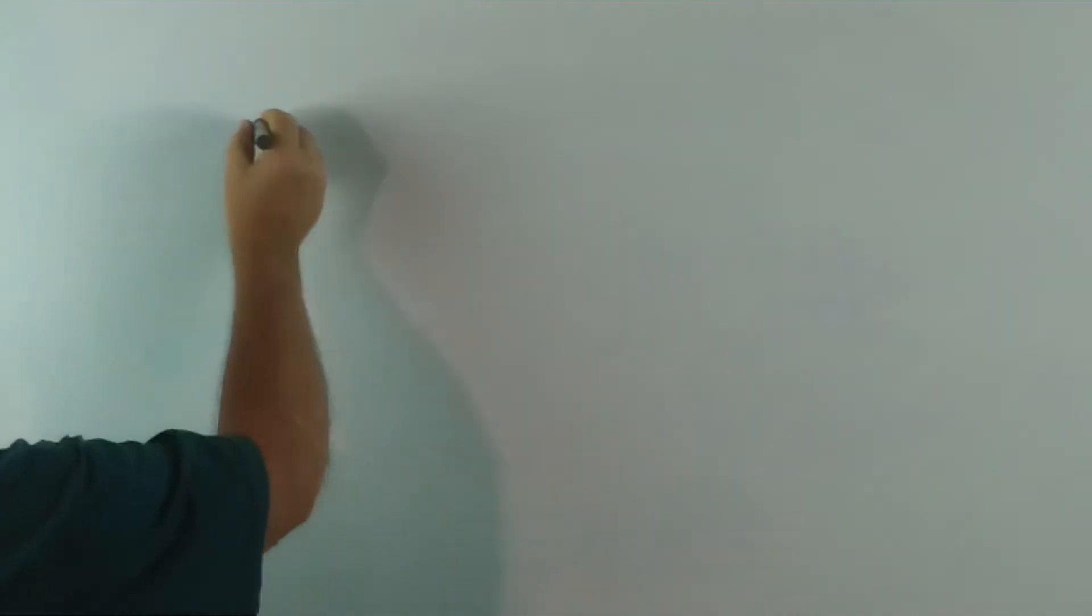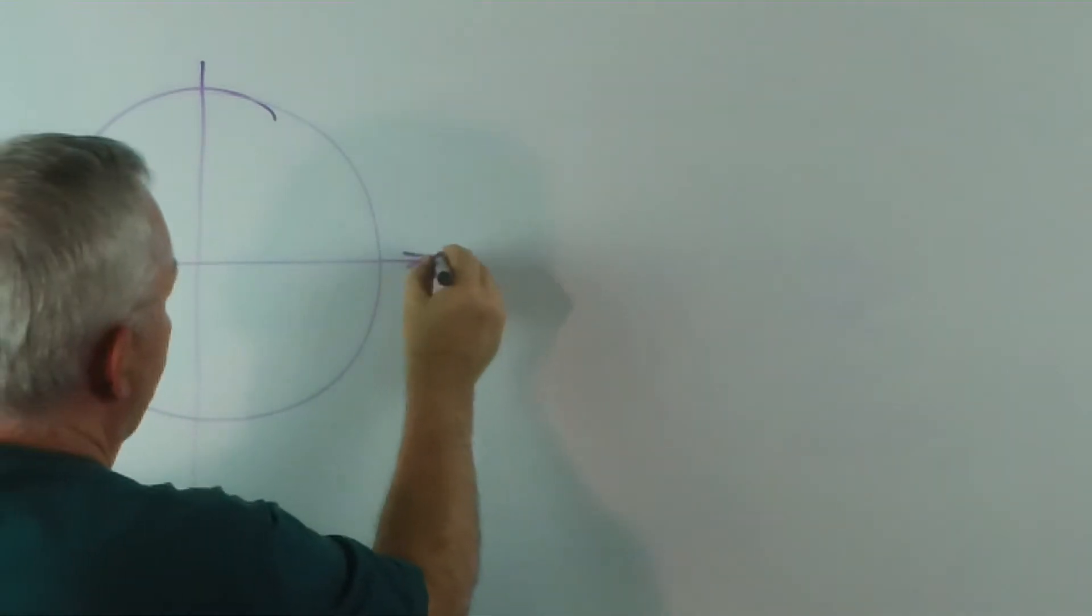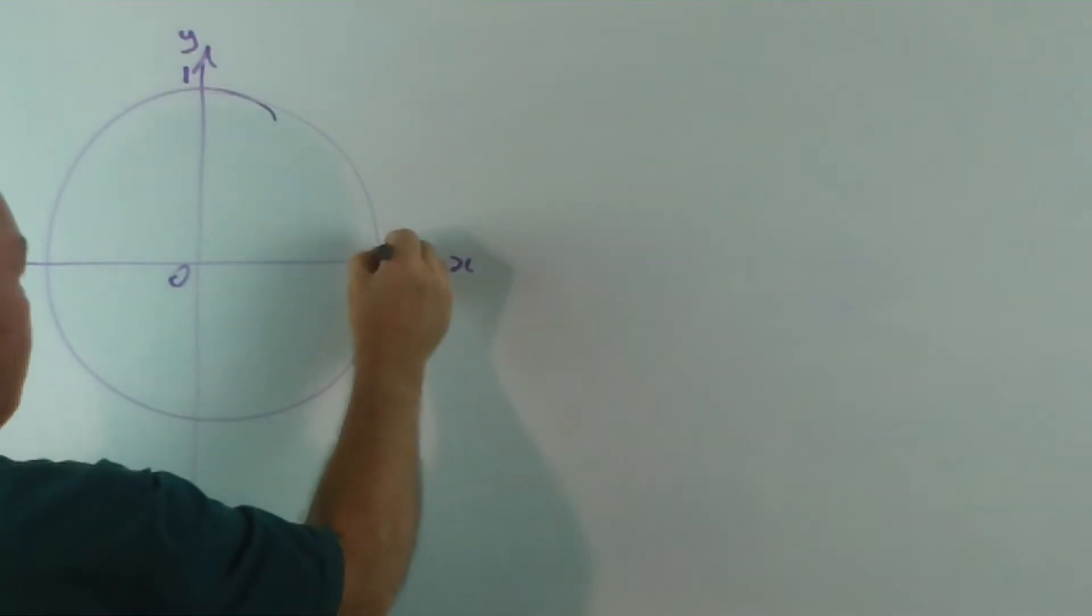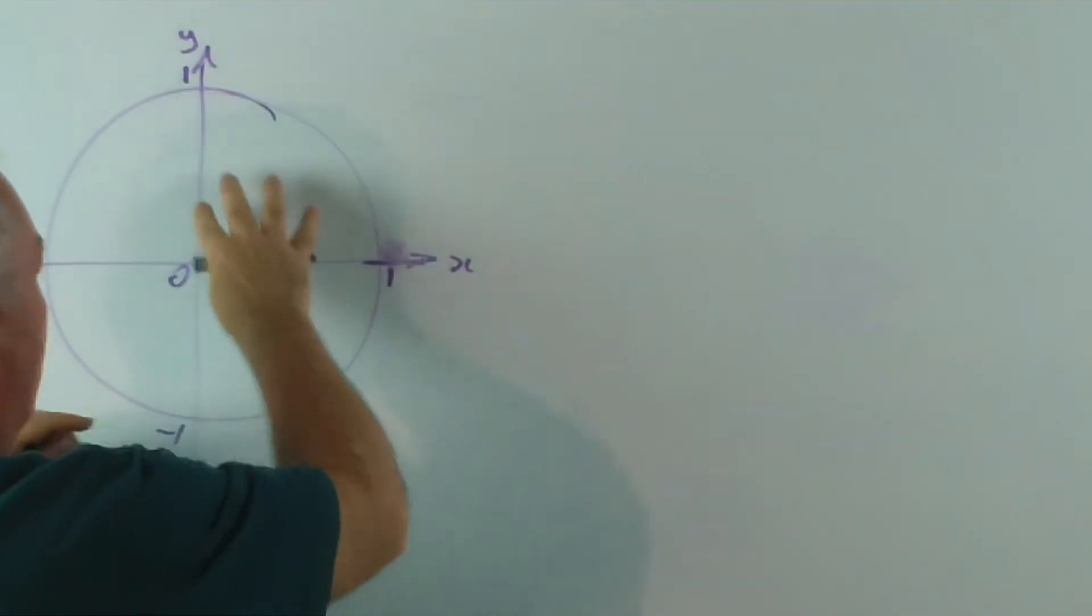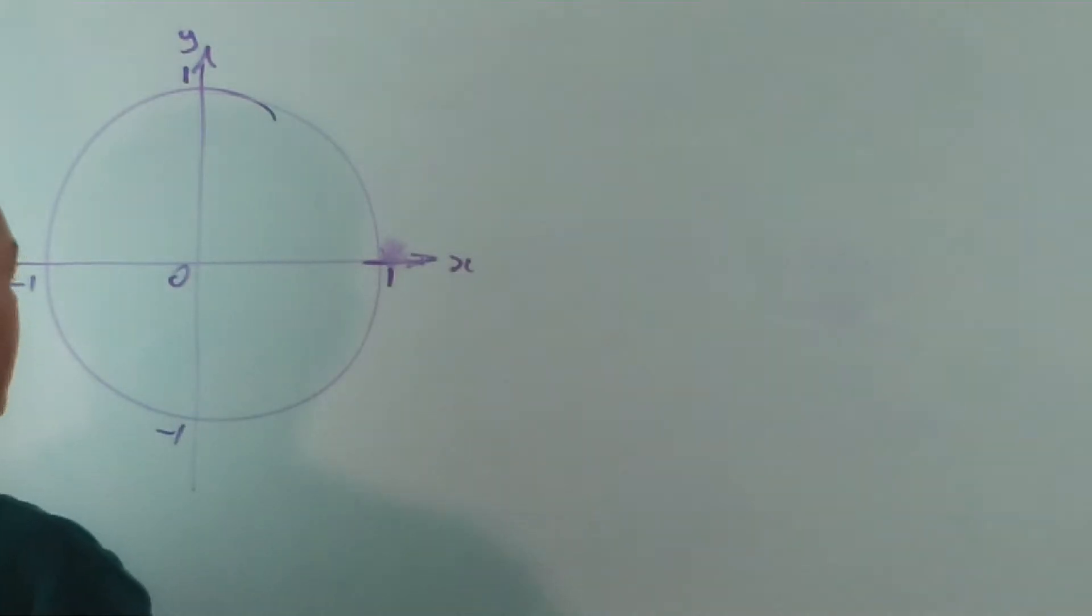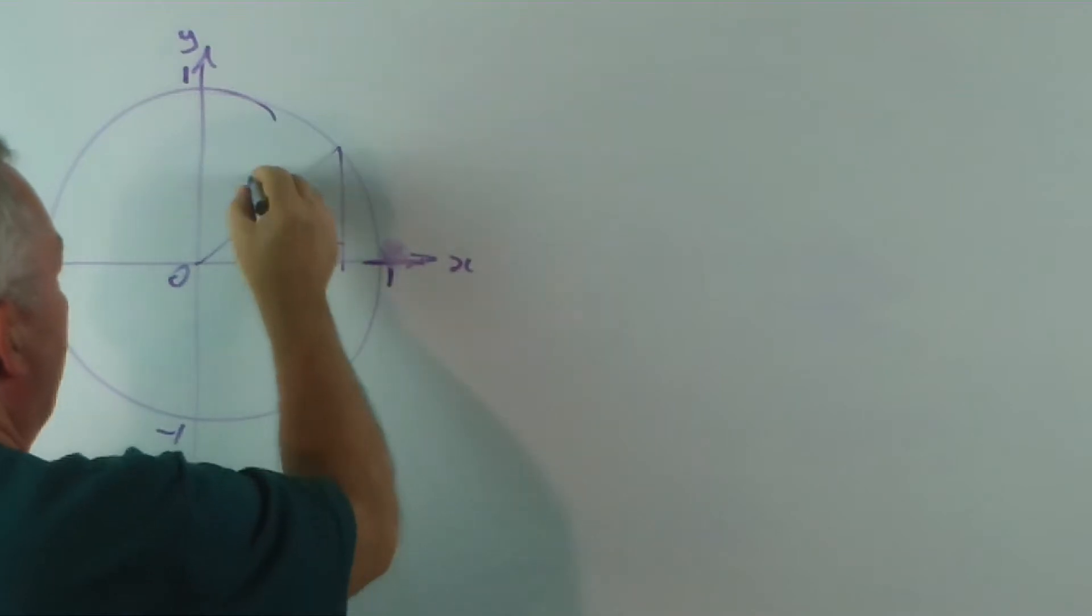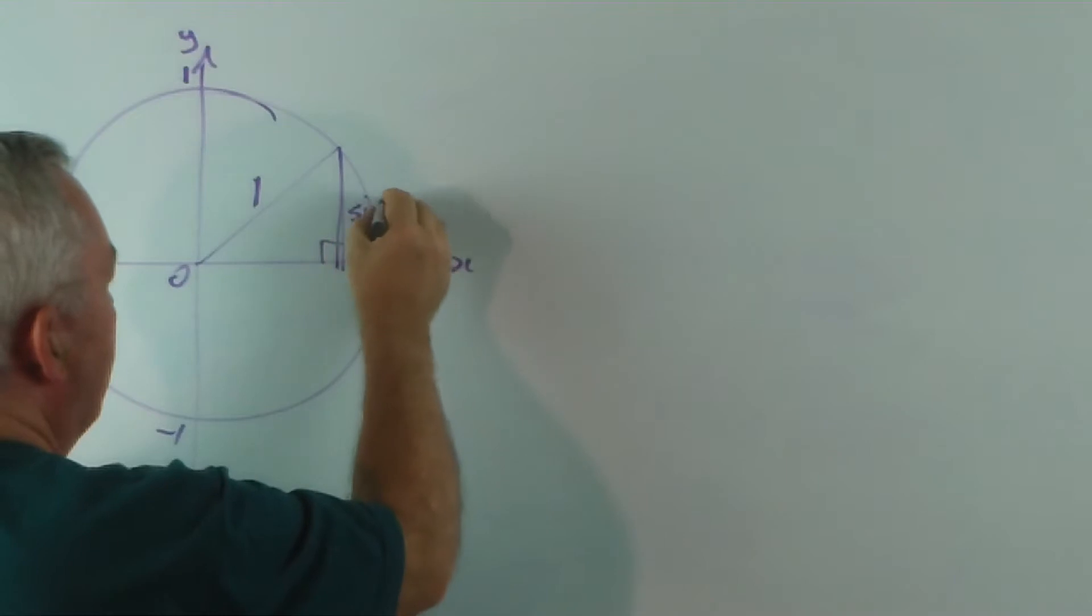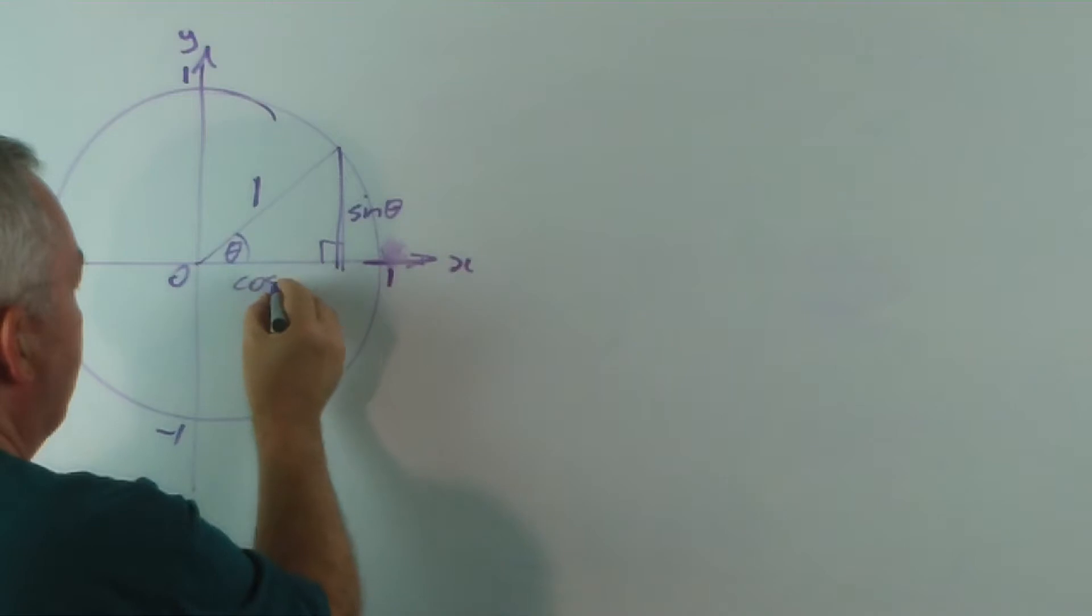So let's redraw this very quickly. We have our x and y-axis. And because it's a unit circle, we try and keep the numbers away from the first quadrant where we do most of our work. We draw a right angle triangle, and if the radius is one, we learned that this height was sine theta, if that's theta, and this base is the cosine of theta.